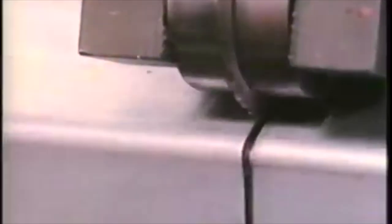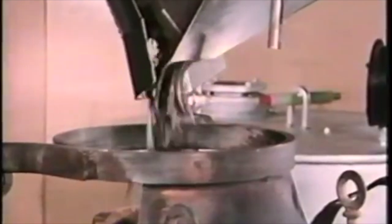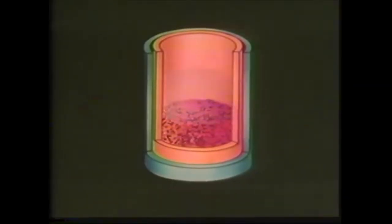Upon their removal from the core, the fuel elements were declad and the uranium fuel cut into short lengths and placed in a crucible. The fuel was then mixed with a combination of barium, calcium, and magnesium chloride salts and heated to 1300 degrees Celsius.